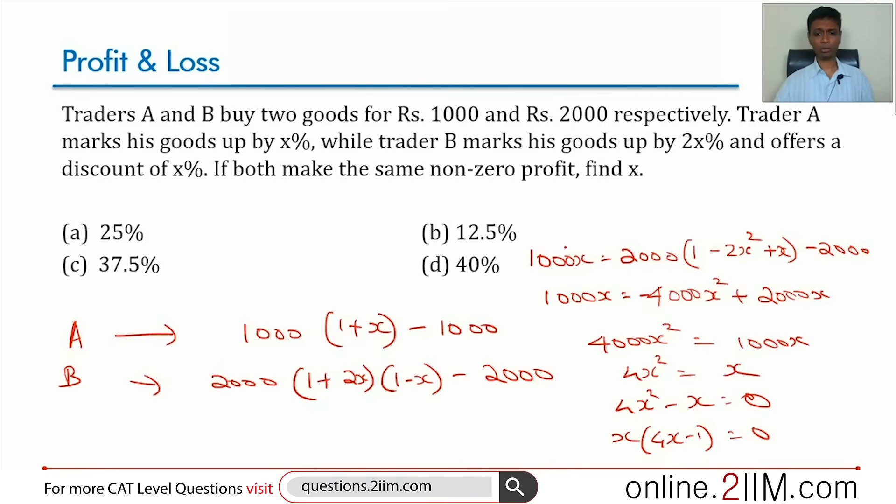1/4 is 25 percent. That's the answer, option A. Now, this skill of writing X percent as just X - what I am treating X as is something like 0.3, 0.2, 0.5.